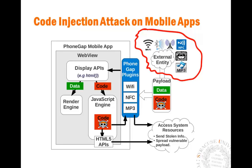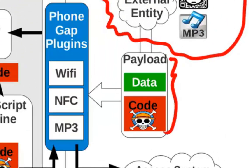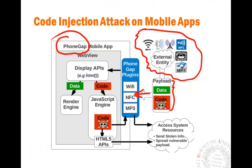Typically we think those external sources just contain data — so what's the danger? If you use a native programming language like Java or Objective-C, you just get the data, display it, and there's not much risk. But if the app is written in HTML5-based technology — for example, using PhoneGap, the most popular framework for developing HTML5-based apps — then an attacker can put code inside the payload alongside the data.